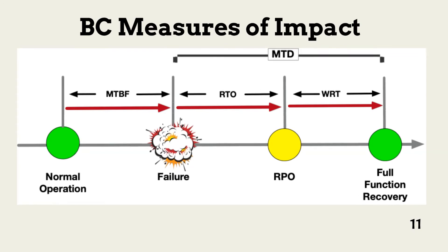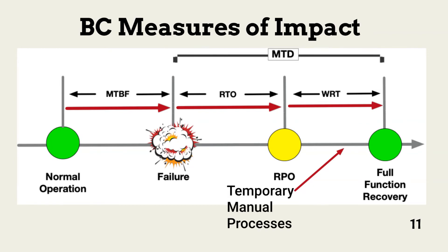The combined time represented by the RTO and the WRT should fall within the maximum tolerable downtime. It is also important to note that manual processes identified during business continuity planning can restore full but inefficient function operation before the end of the WRT is reached.